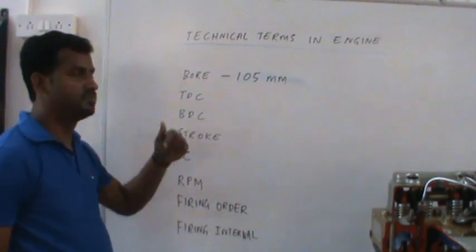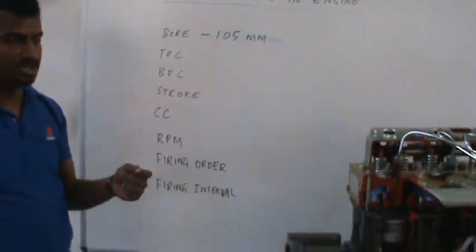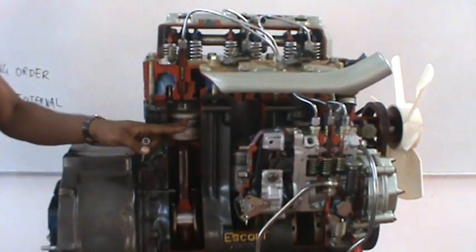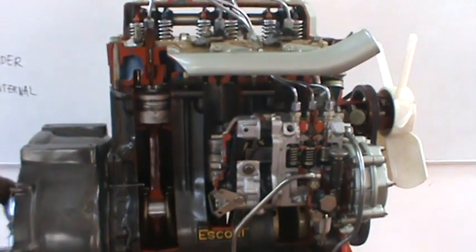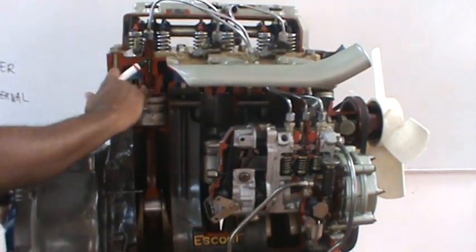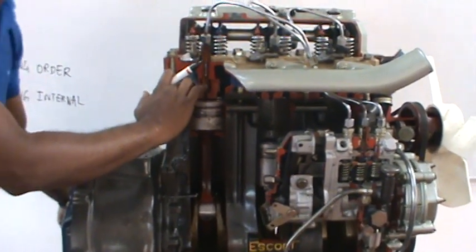The next term is TDC. Inside each liner there is a piston. This piston will move up and down. The uppermost point of this piston is top dead center. This is the uppermost point. This point is called as TDC.